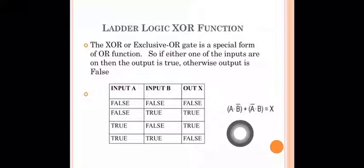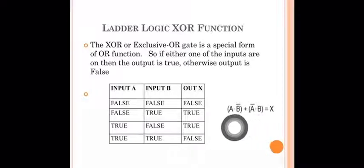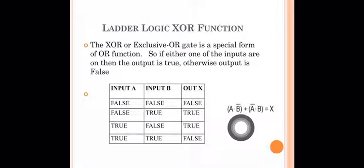The Boolean expression for XOR is A·B̄ + Ā·B = X. If A is a normally open switch, then B̄ is a normally closed switch. This gives us the connection for the ladder logic implementation.